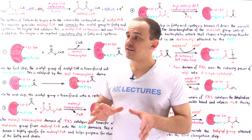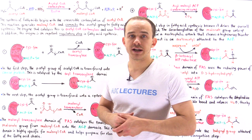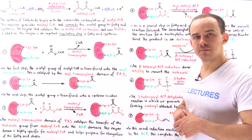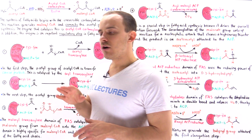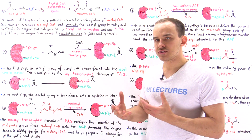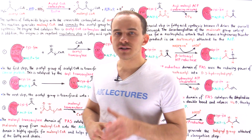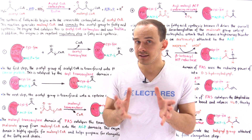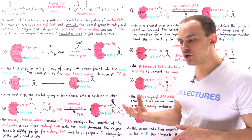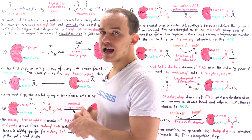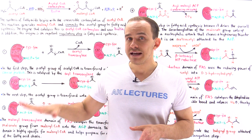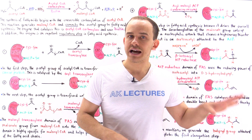Let's take a look at the individual steps that help us generate fatty acid molecules. All of these steps take place in the cytoplasm of our cell. The building blocks of fatty acid molecules are acetyl coenzyme A molecules, and we build these acetyl coenzyme A molecules in the matrix of the mitochondria. So to actually use acetyl coenzyme A to synthesize fatty acids, we have to transport those acetyl coenzyme A molecules from the mitochondrial matrix into the cytoplasm of the cell.